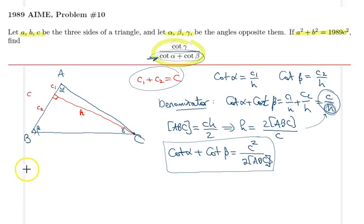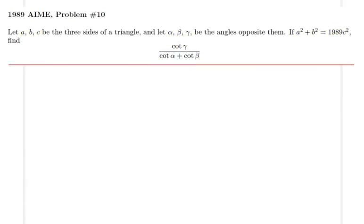Now for the numerator, we need to evaluate cotangent of gamma, which is equal to cosine gamma divided by sine gamma. So I will separately calculate cosine gamma and sine gamma. For cosine gamma, I will use the law of cosines. Let me open a new page and proceed.